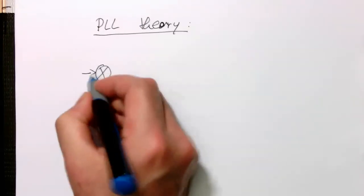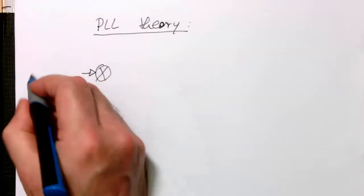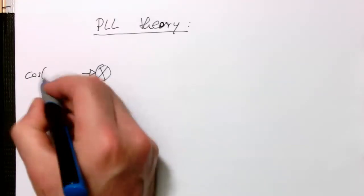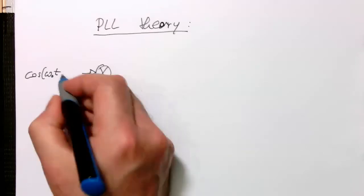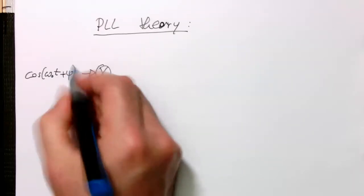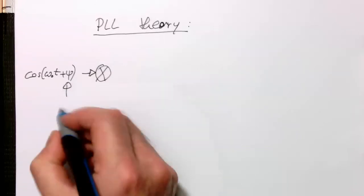So we've got our input and that's our cosine omega zero t, but now I'm adding an unknown phase phi to it. So that's here, unknown phase.